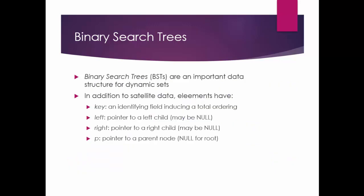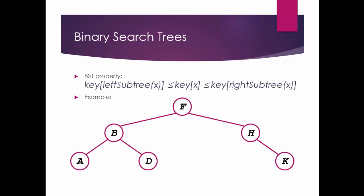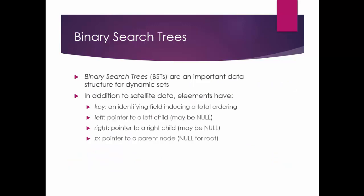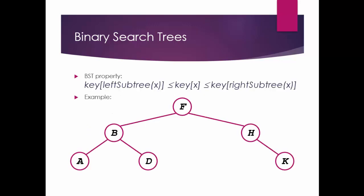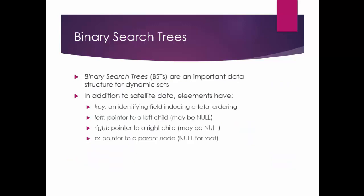Let us learn some terms. Key is the node value or the data — in this case the root node has the key f, and intermediate nodes have b and h. Those are the keys. Whatever is on the left side of the node is called the left child. When we implement a binary tree using linked list, we have left and right pointers. So f has left child b, and a and d are left children of b. And f's right child is h, and h's right child is k. So this is the left and right pointers.